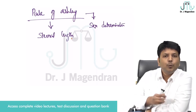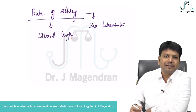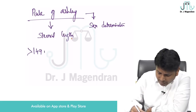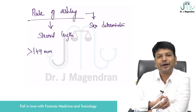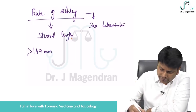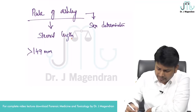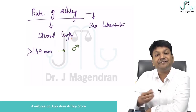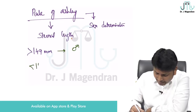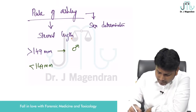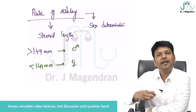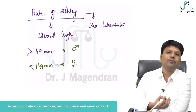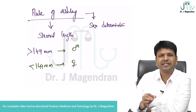What is this rule? We have to measure the sternum length. If it is more than 149 millimeters, it is male. If it is less than 149 millimeters, it is female. It is very simple.